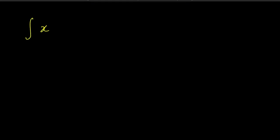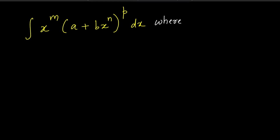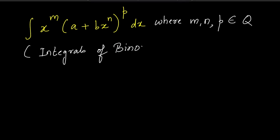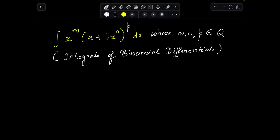Hello everyone. Today we are going to learn how to integrate integrands of the type x^m (a + bx^n)^p, where m, n, and p are rational numbers. We are going to learn how to integrate binomial differentials — that is the name by which we call them. I'll be telling you the ways to integrate this depending upon the m, n, and p values, and I'll also be taking some examples to support those cases.